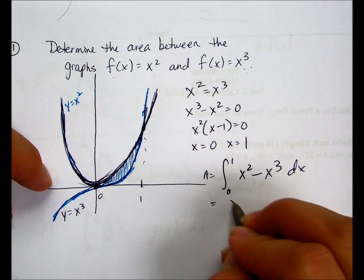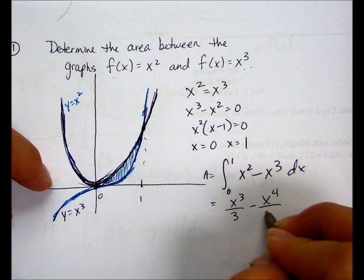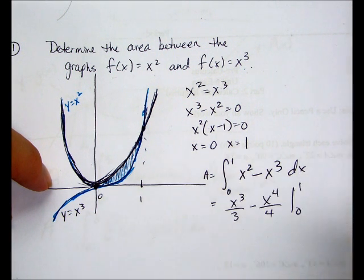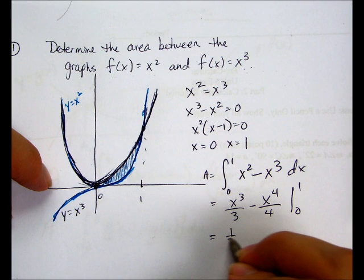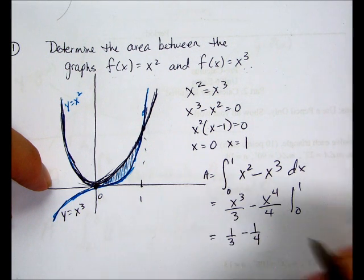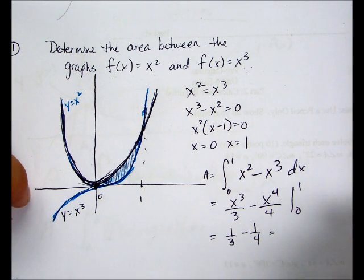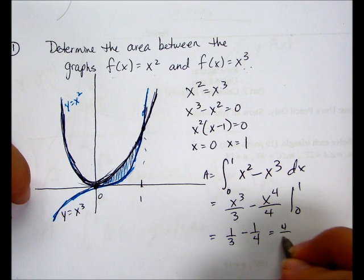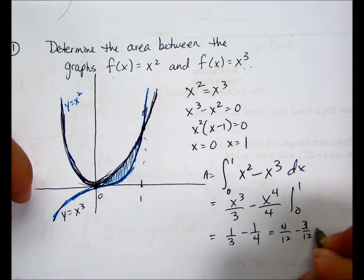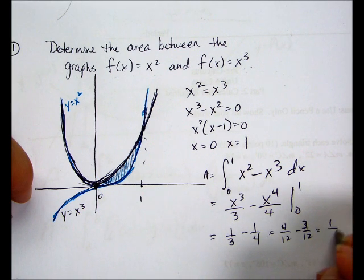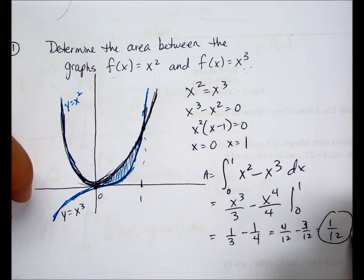So we're going to do this. It's going to get cubed over three minus fourth over four, evaluated from zero to one, which is one-third minus one-fourth, which is one-twelfth units squared.